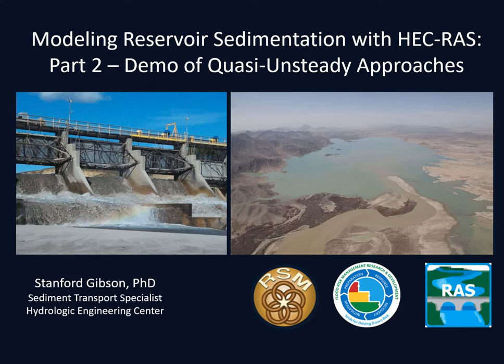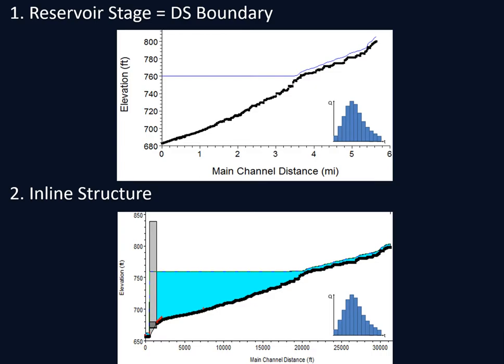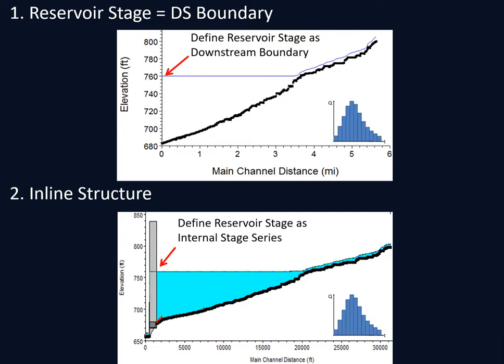In the first video, we talked about two different ways to model a long-term sediment deposition analysis in RAS using the quasi-unsteady approach. The two ways are: first, to end the model just upstream of the dam and use the cross-section just upstream of the dam as the downstream boundary condition by defining the reservoir stage as the downstream boundary.